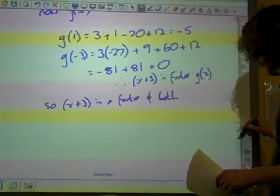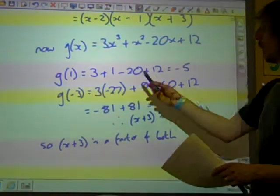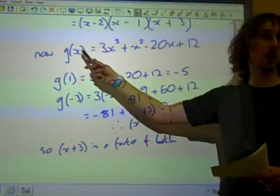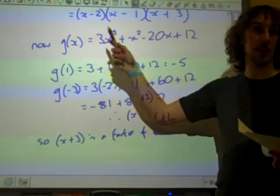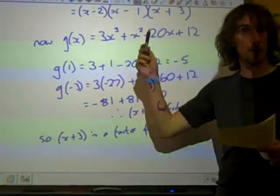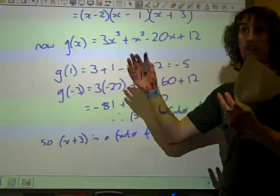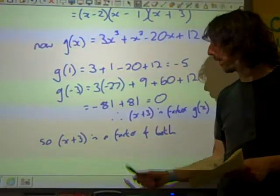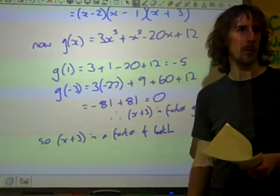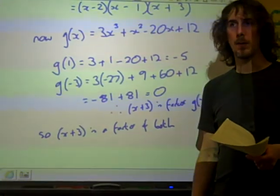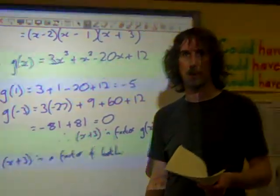Now what we could have done here is we could have factorised g of x because we knew that x minus 2 was a factor of that. And then we could have done exactly what we did with f of x. But that was probably a sort of quick and more efficient way of doing it. There we go. Happy with that? Great.